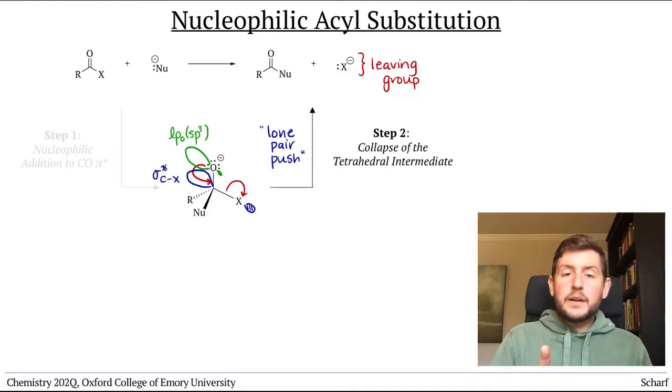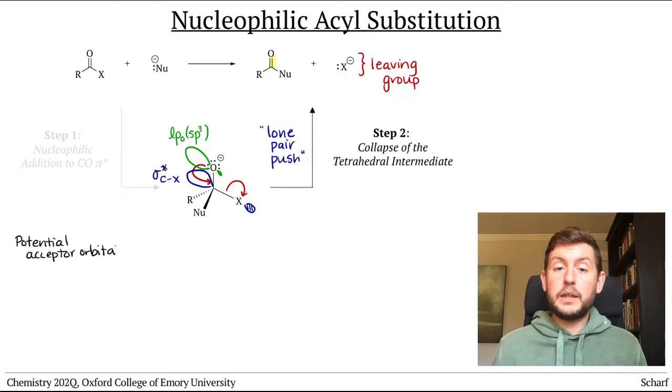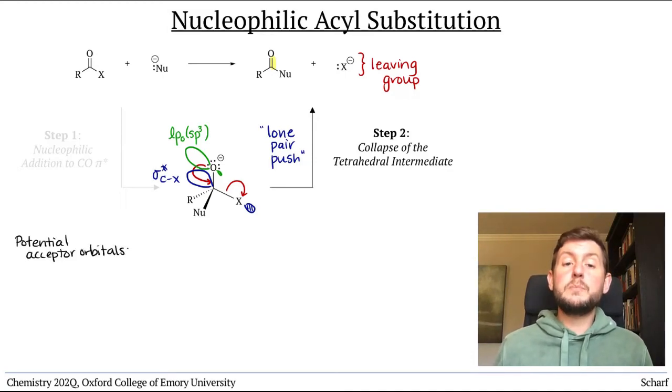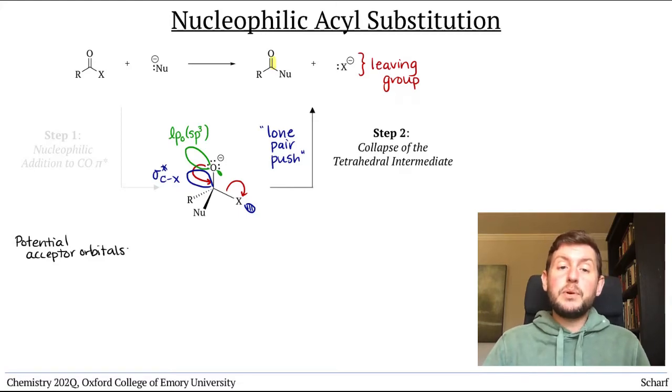But the lone pair actually has three potential sigma star orbitals that it could overlap with, one corresponding to each of the three groups attached to our central carbon.